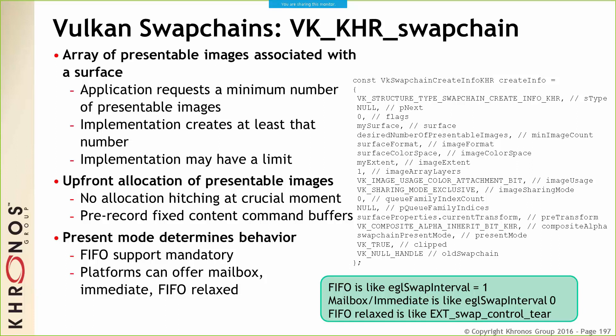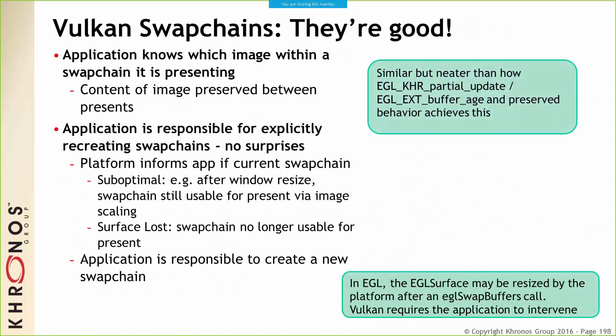Swap chains are not poorly designed — we've had very good feedback overall about how they've been designed. A key thing is you know which image within the swap chain you'll be presenting, and the content of that image is preserved from the previous content you put on it. It's similar, but not exactly the same, as how buffer age and partial update is done in EGL, but done in a way that you don't have to query to find out the age of the image — you know it because you're about to send that image in and you know how old it is. The application is also responsible for recreating swap chains, so no surprises at all.